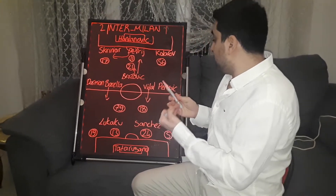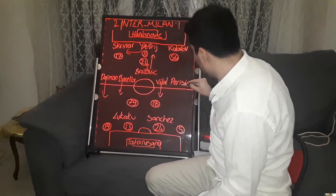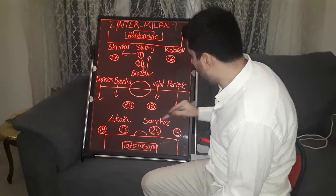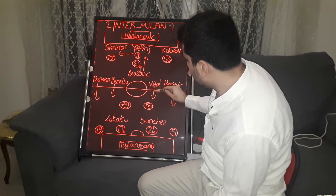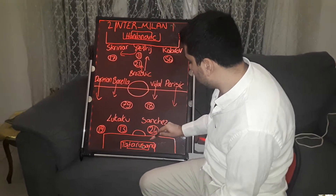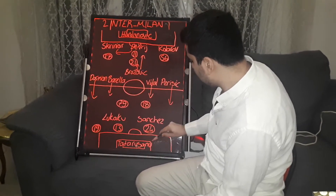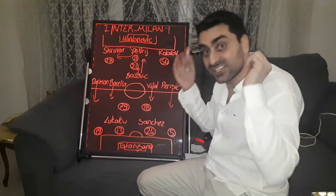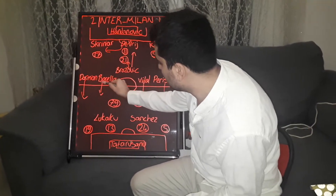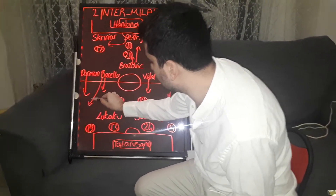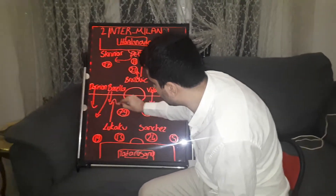Milan developed attacks from the wings with Darmian and Perisic sometimes bringing the ball forward. When Darmian came from the right, Arturo Vidal got into Milan's penalty area, and Perisic came into the Milan box to the back post for a header alongside Vidal. Barella came close to support Darmian, and also moved to the left during Milan attacks. Romelu Lukaku dropped back to midfield to collect the ball.